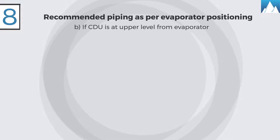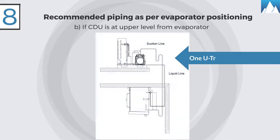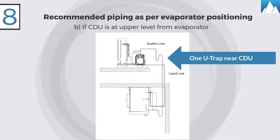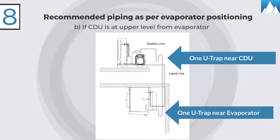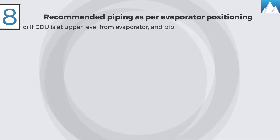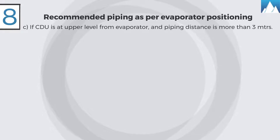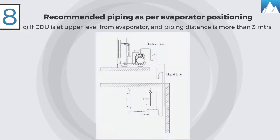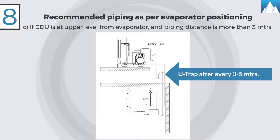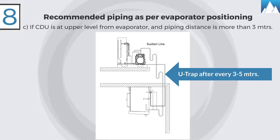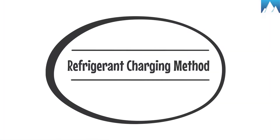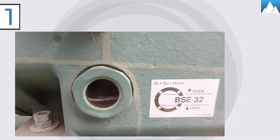B, if the condensing unit is at upper level from the evaporator, give U-traps — one near the suction line of the condensing unit and one near the evaporator. C, if the condensing unit is at upper level from the evaporator and piping distance is more than three meters, give U-traps at a distance of every three to five meters in the suction line of interconnected pipes.